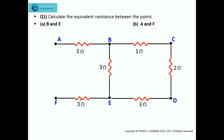The first question: calculate the equivalent resistance between the points B and E, and A and F. These are the points B and E, and these are the points A and F.